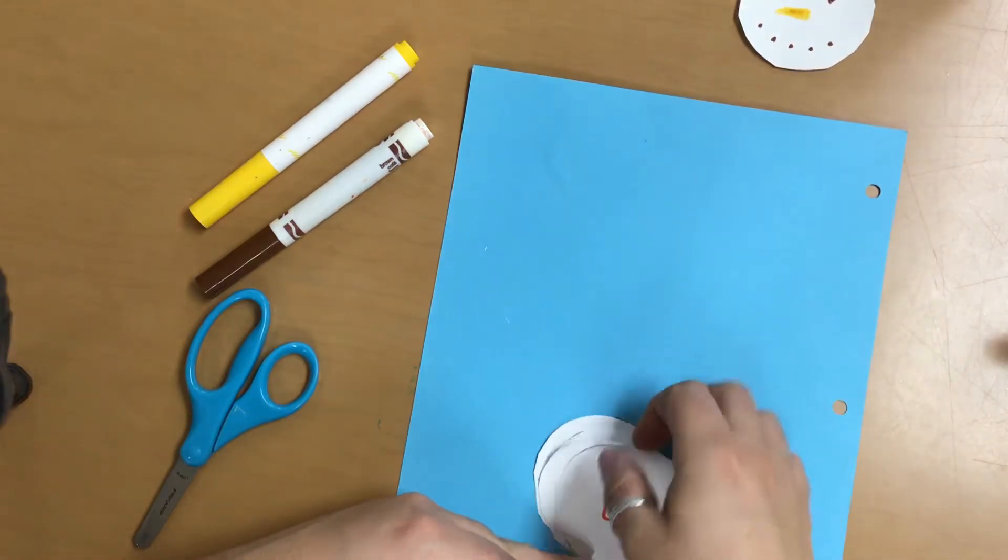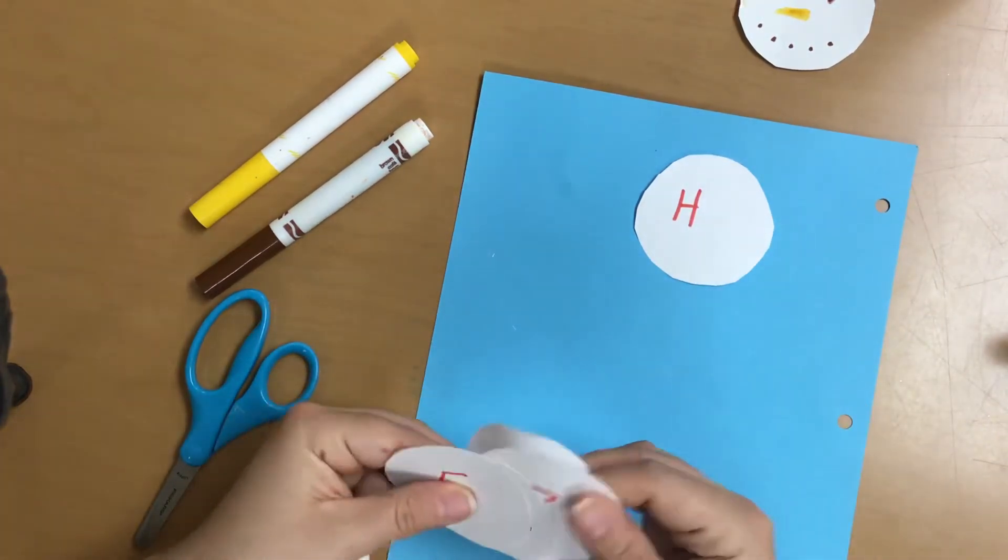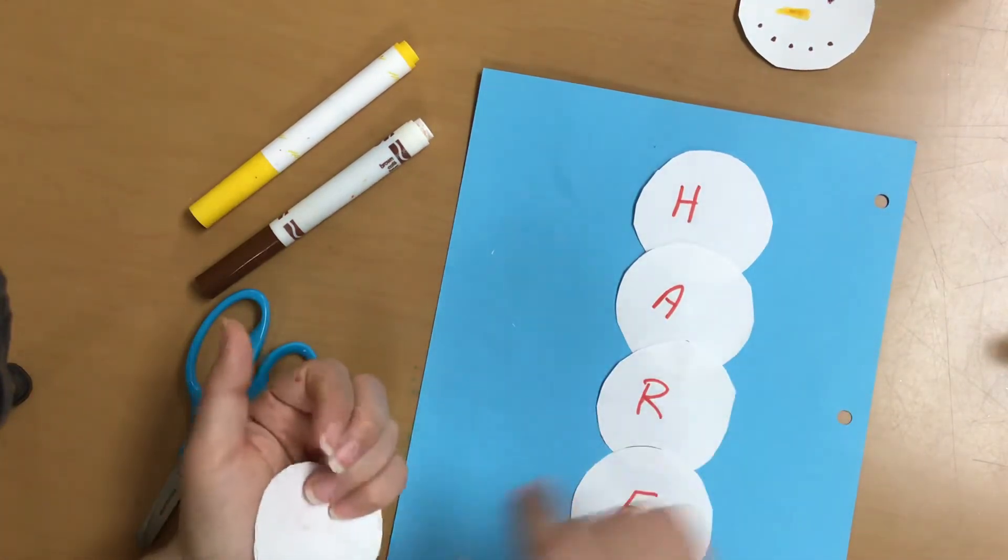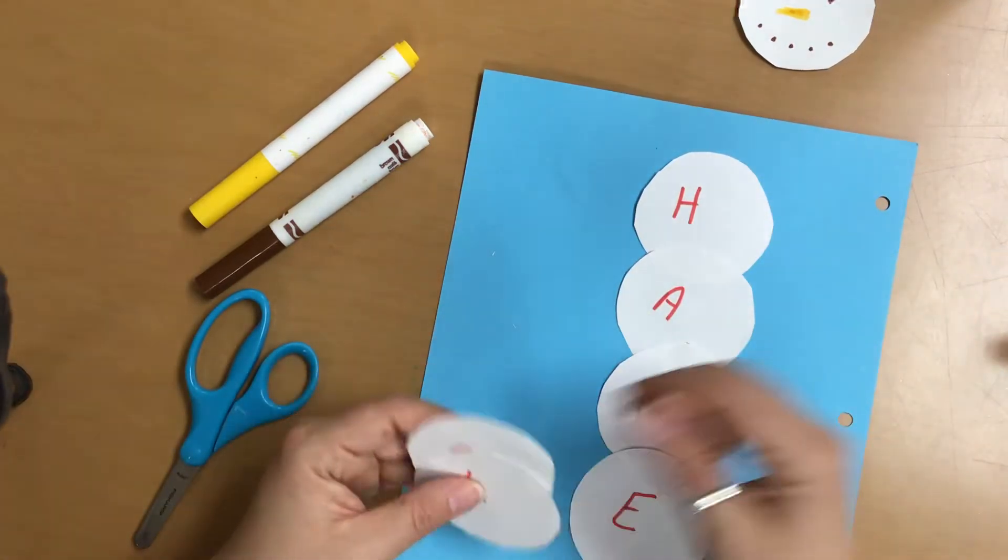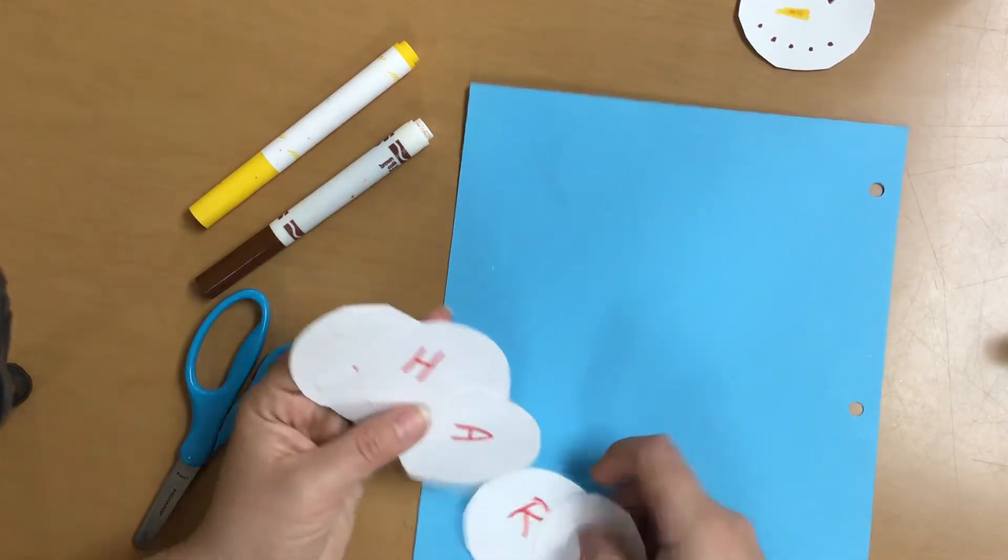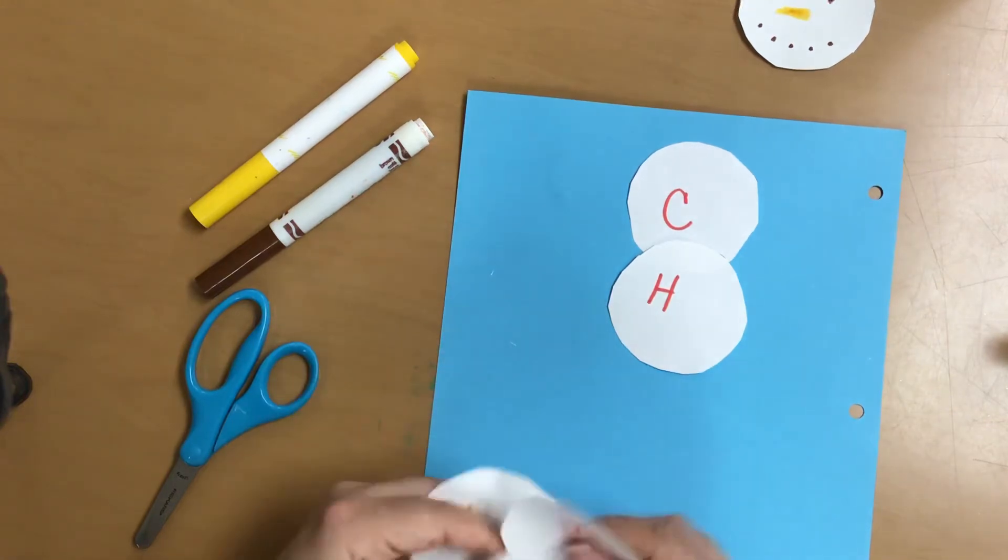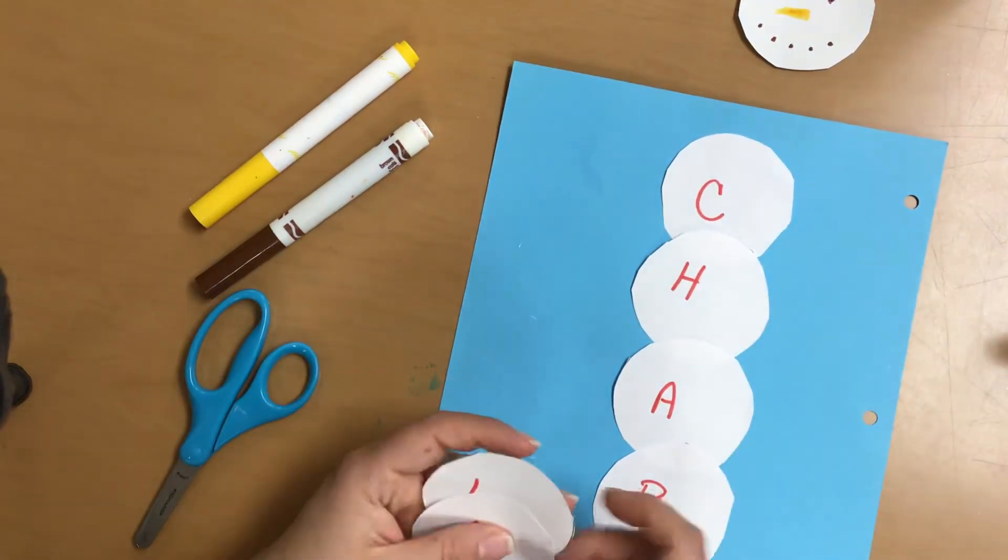We can do H-A-R-E. That spells hare. Not hair on your head. Hare like a bunny rabbit. Yep. And we can do, what else can I spell with my name? I can spell char. Char is like when you burn something. You char it. C-H-A-R. Char.